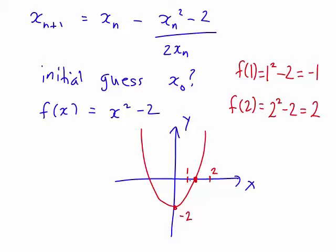Therefore, it might be useful to let x₀ be 1 or 2. So, let's try x₀ = 1 in this case, and apply the Newton-Raphson method using this value of x₀.